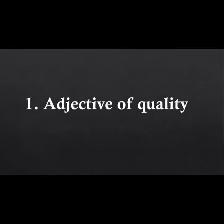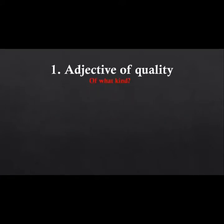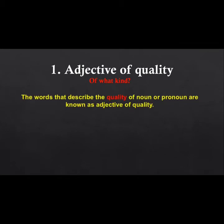The first one is adjective of quality, which in Hindi we call 'gunvachak visheshan.' Adjective of quality answers the question: of what kind? The words that describe the quality of a noun or pronoun are adjectives of quality. You should remember this type by the question: of what kind? — meaning 'kis tarah ka hai?'